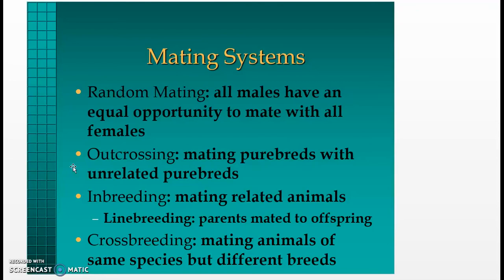A random mating is where all males have an equal opportunity to mate with all females. Outcrossing is mating purebreds with unrelated purebreds. Inbreeding is mating related animals. Line breeding is mating parents to their offspring. Crossbreeding is mating animals of the same species but different breeds.